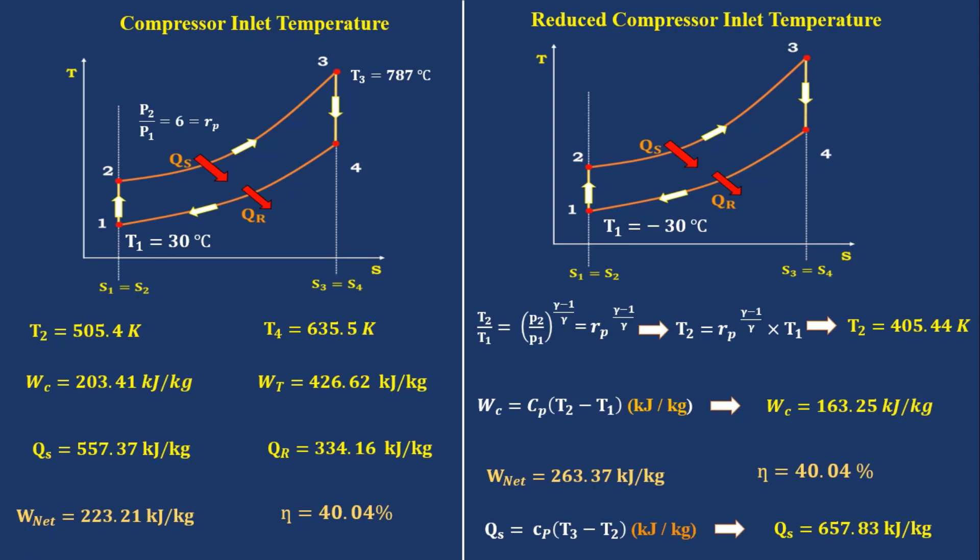So if ambient temperature is low, work given to the compressor will reduce, which results in increase in net work done, but also which results in increase in heat addition. But efficiency never varies at a given work output. That you have to remember.